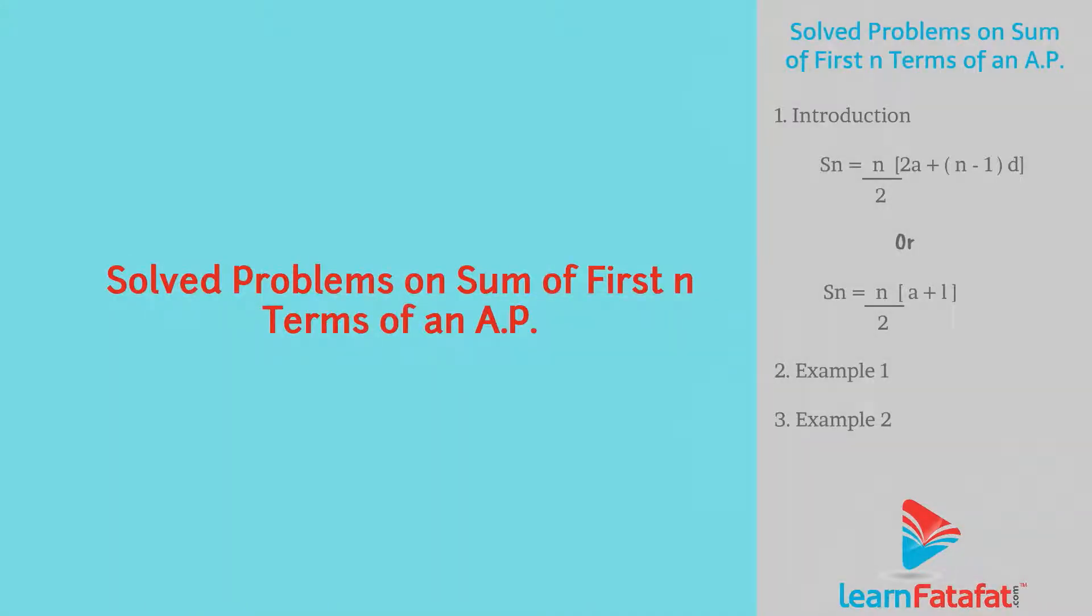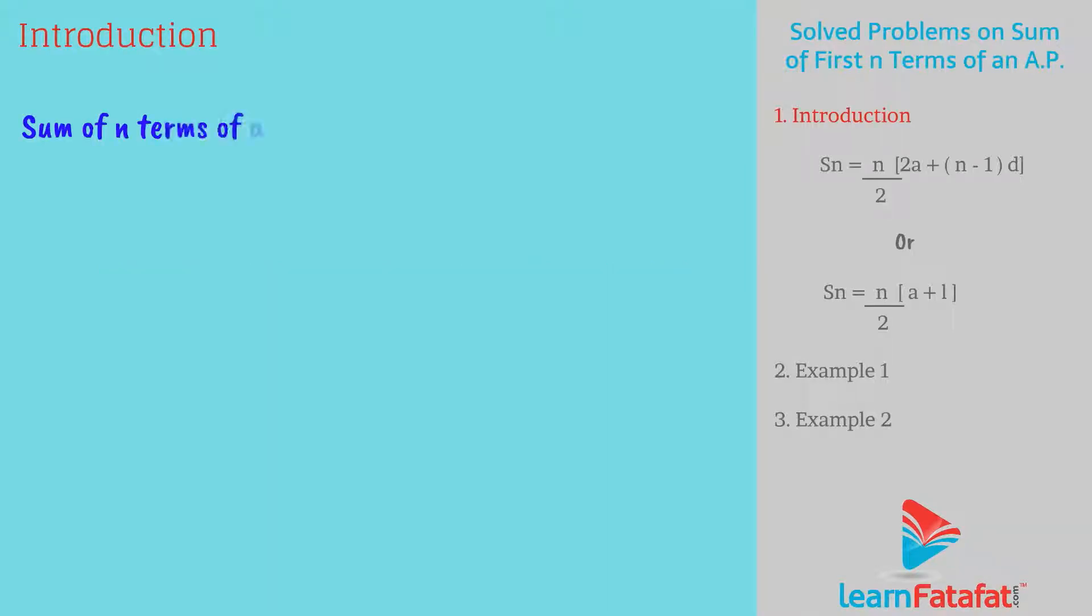Solve problems on sum of first n terms of an AP. Dear students, the sum of n terms of an AP is given as Sn equals n upon 2 into 2a plus n minus 1 into d. Or Sn equals n upon 2 into a plus l, where a is the first term and l is the last term.